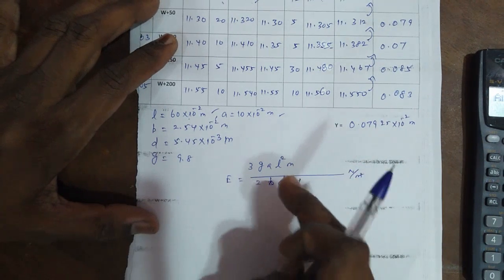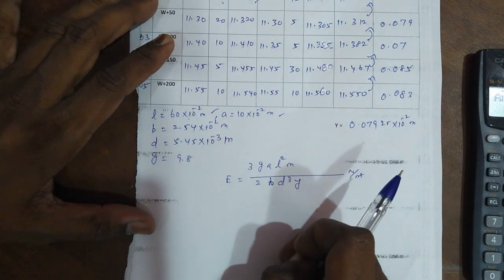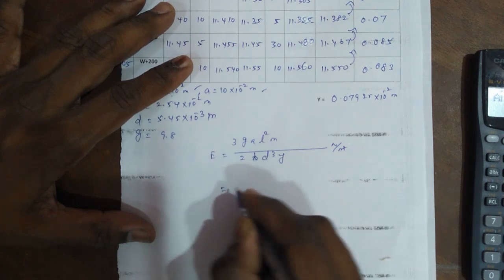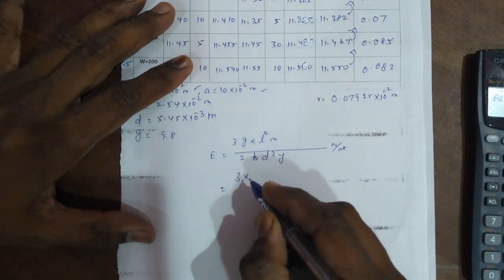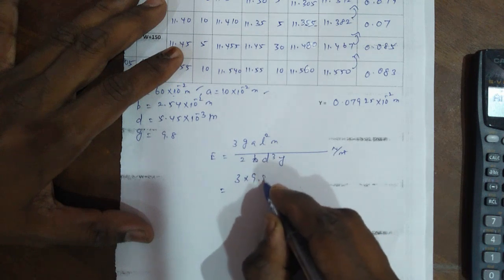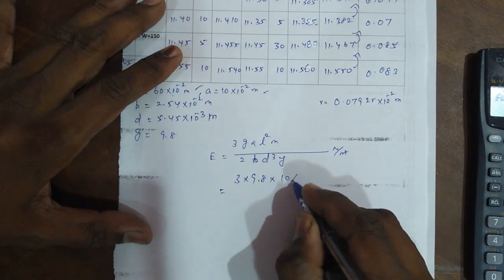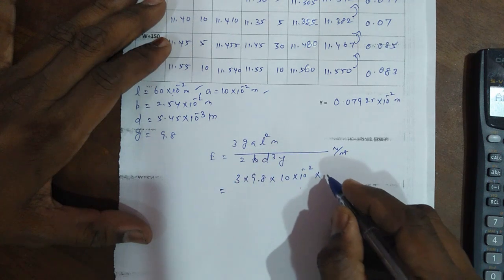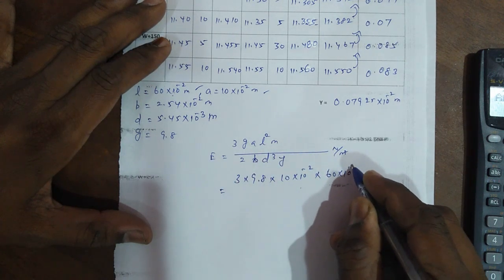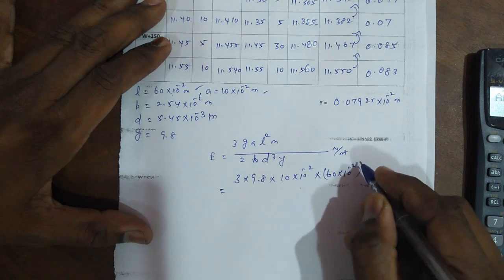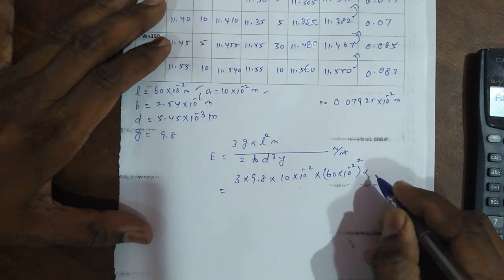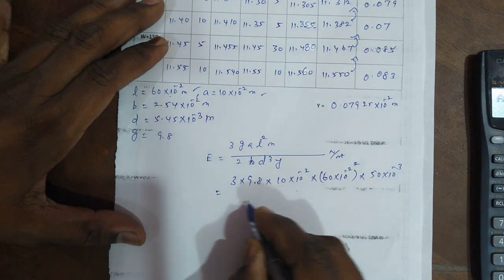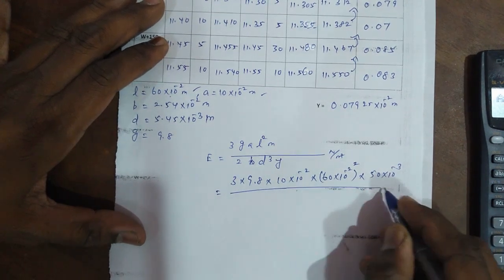These values substitute into the main formula. Young's modulus uniform bending main formula. Young's modulus of the bar equals 3 into g 9.8 into A, 10 into 10 to the power minus 2, into L, 60 centimeters, 60 into 10 to the power minus 2 meters whole square, into M mass 50 grams, 50 into 10 to the power minus 3.